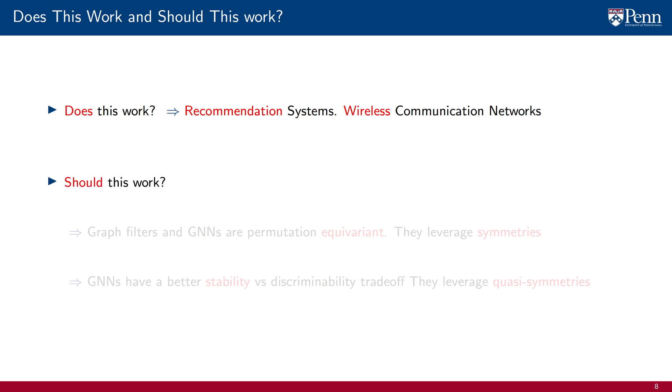And should this work? Should we expect GNNs to solve the problems they solve? Yes. We have offered two theoretical explanations. We have shown that graph filters and GNNs are permutation equivariant. This property allows them to leverage signal symmetries. It explains why graph filters outperform linear regression and why GNNs outperform fully connected neural networks. This is legit science, by the way. Our theory makes a prediction. This prediction is ratified experimentally. We have also shown that GNNs have a better stability versus discriminability trade-off relative to graph filters. This implies that GNNs are better than graph filters at leveraging quasi-symmetries and explains why GNNs outperform graph filters. This is also legit science. Our theory makes a prediction, and this prediction is ratified experimentally. We will review permutation equivariance and stability properties of graph filters and GNNs in this midterm.